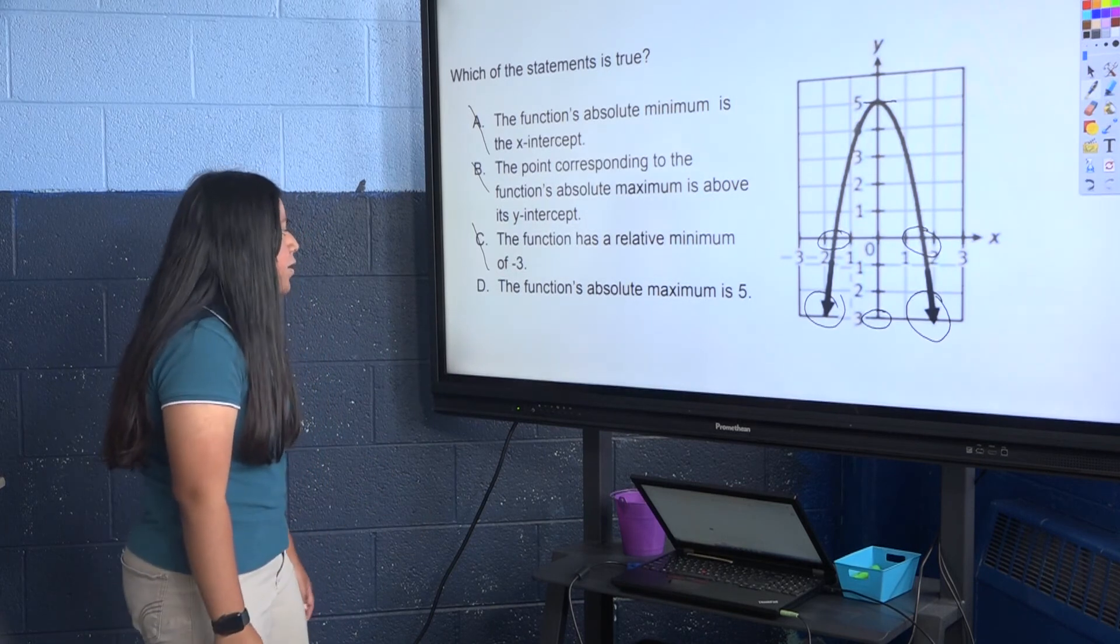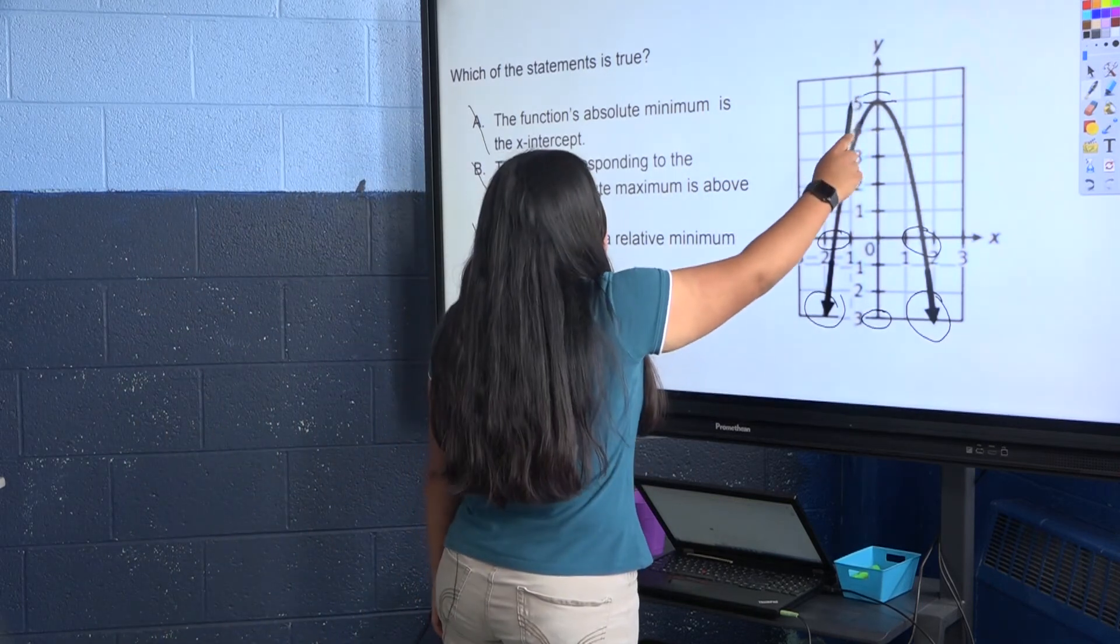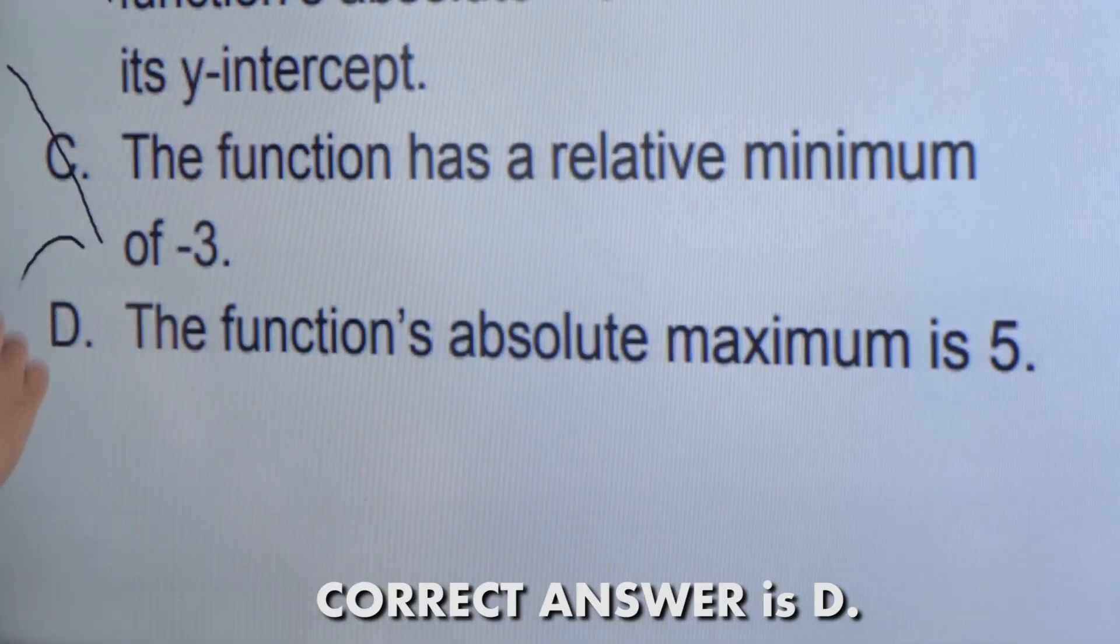Our last answer is D. The function's absolute maximum is 5. As we were talking about in B, the graph stops right here and does not go over it. So the absolute maximum would be 5.